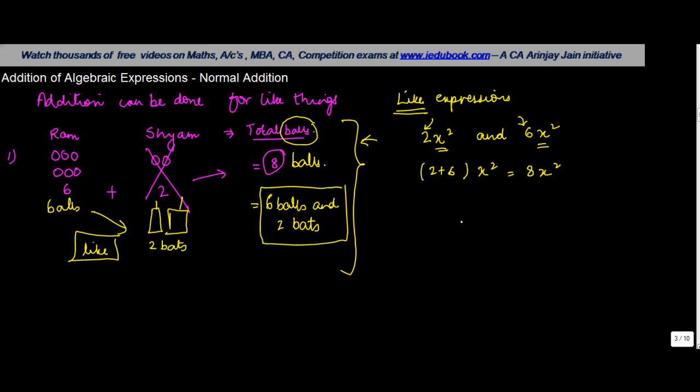But if instead of this you would have a situation where you had 2x² plus 8x, you were told to do the sum of 2x² and 8x. Now if you notice, the literals are different. Here you have x², here you have x.